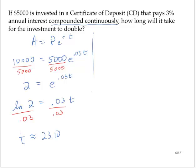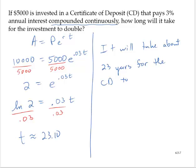Conclusion: It will take about 23 years for the CD to double in value.